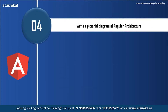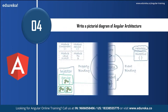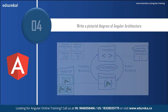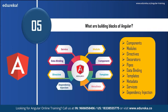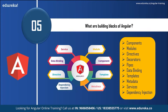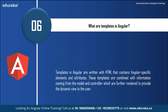Draw a pictorial diagram of the Angular architecture — this is a most-asked question in aptitude rounds, so make sure you practice the architectural diagram of Angular several times. The building blocks of Angular include: components, modules, directives, decorators, pipes, data binding, templates, metadata, services, and dependency injection.